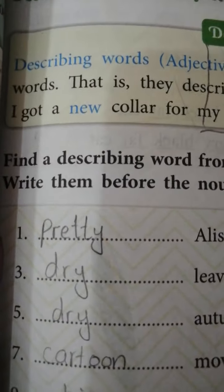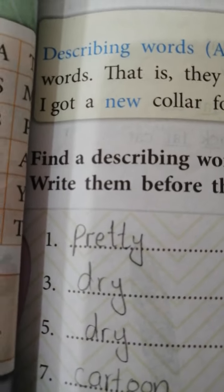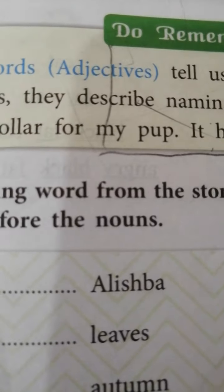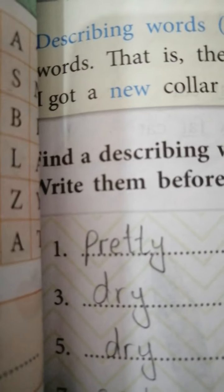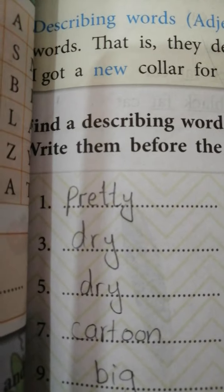Next, the exercise says: find the describing word from the story for each naming word below, and write them before the nouns. So Alishwa is a noun — which word describes Alishwa in the story? Pretty. So we write pretty Alishwa.